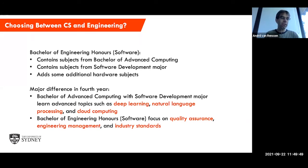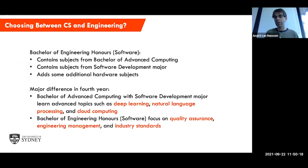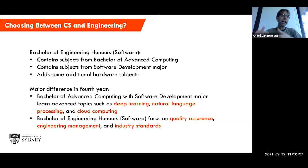The major difference between the two degrees is actually in the fourth year. In the Bachelor of Advanced Computing, even if you take the software development major, you will learn about very advanced topics like deep learning, cloud computing, and natural language processing. Whereas for the Bachelor of Engineering honors, you learn more about industry-related topics like quality assurance, industry standards, and engineering management. So you should really ask yourself whether you're more interested in the technical computer science side, or in management and quality assurance.